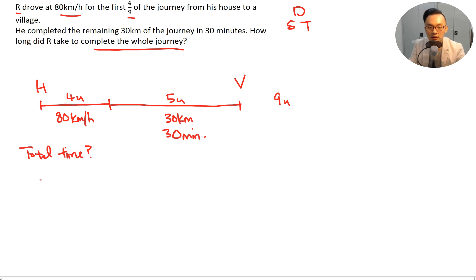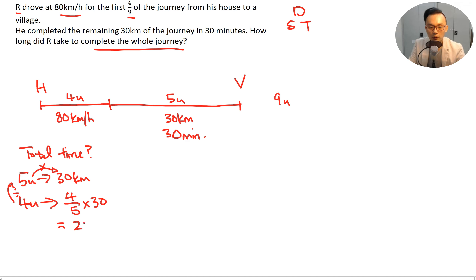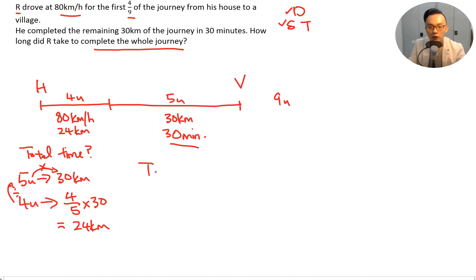Five units is 30 kilometers, so four units equals four divided by five times 30, which equals 24 kilometers. Time for the four-ninths portion equals distance over speed: 24 over 80. Then add that answer to 30 minutes to get the total journey time.